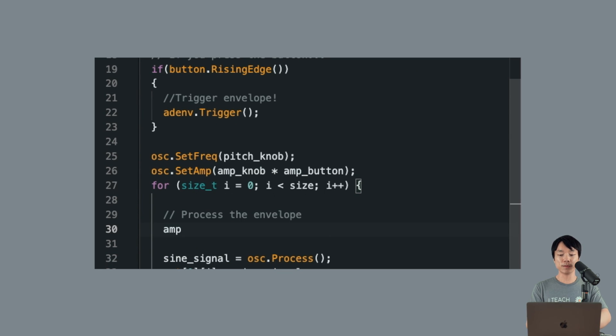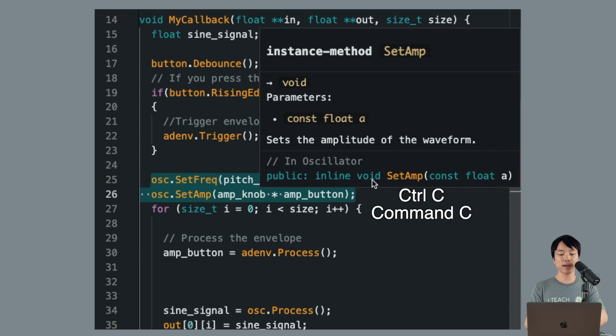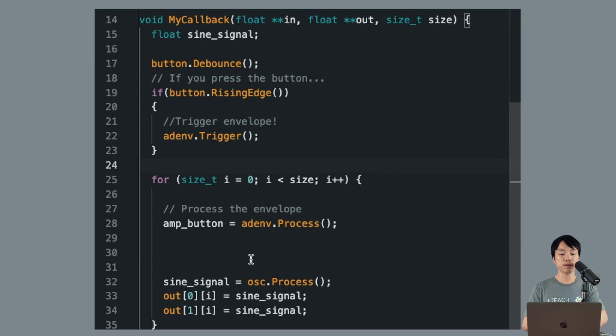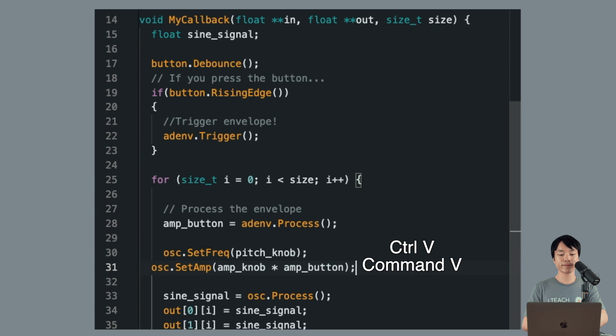Then inside the for loop, we'll add the line amp-button equals ADENV process to process that envelope. This is similar to the float sign signal equals OSC process from the audio output video. And we need to move the setFreak and setAmp functions inside of the for loop. Otherwise, we'll hear an artifact noise. We'll discuss more about what this my callback even is and the purpose of the for loop in a future video.